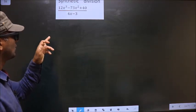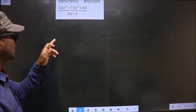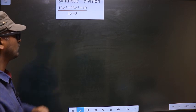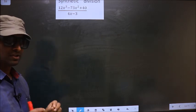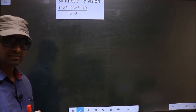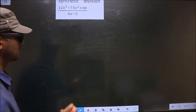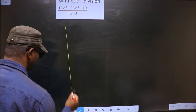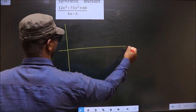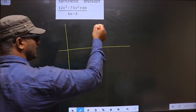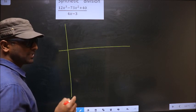Synthetic division: 12x cube minus 73x square plus 40 by 4x minus 3. To do synthetic division, first we should frame it in this way.